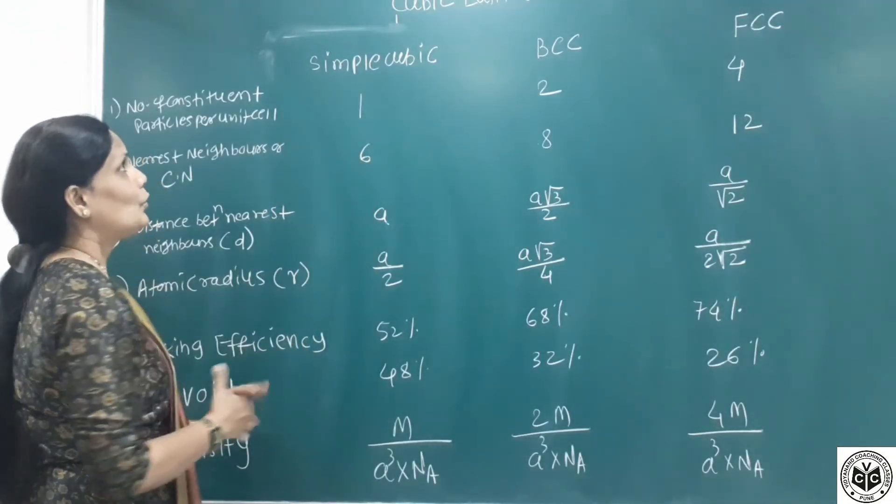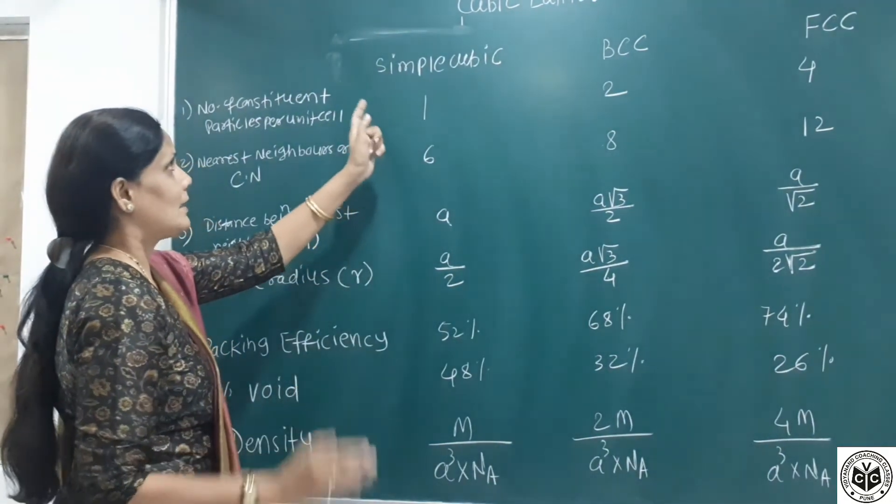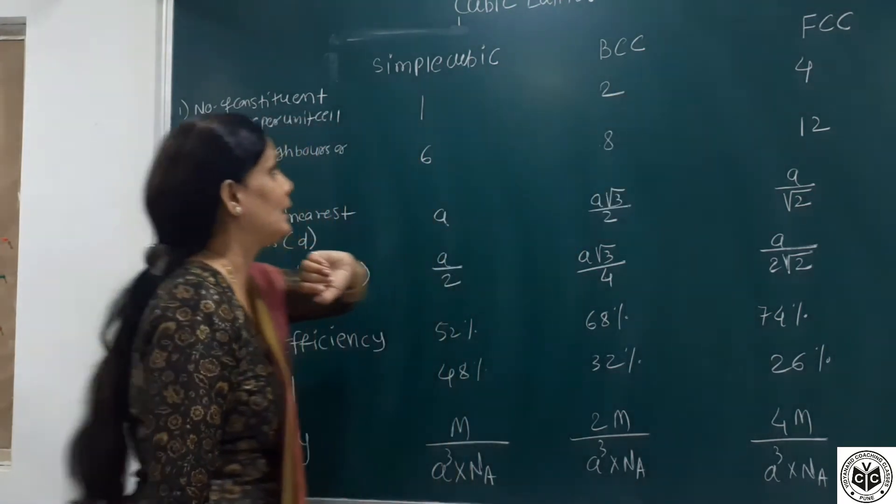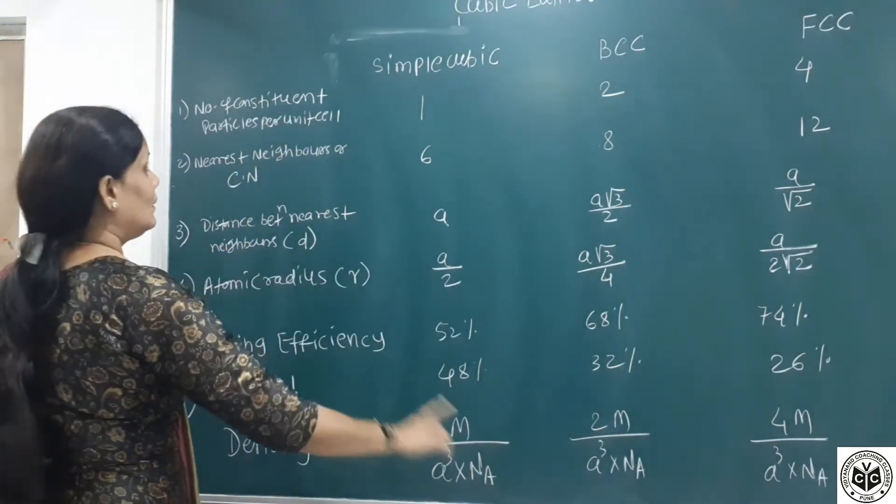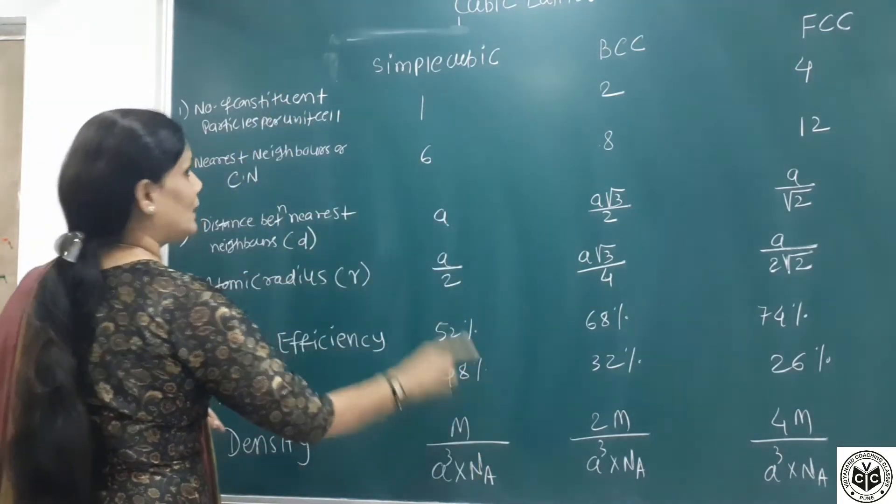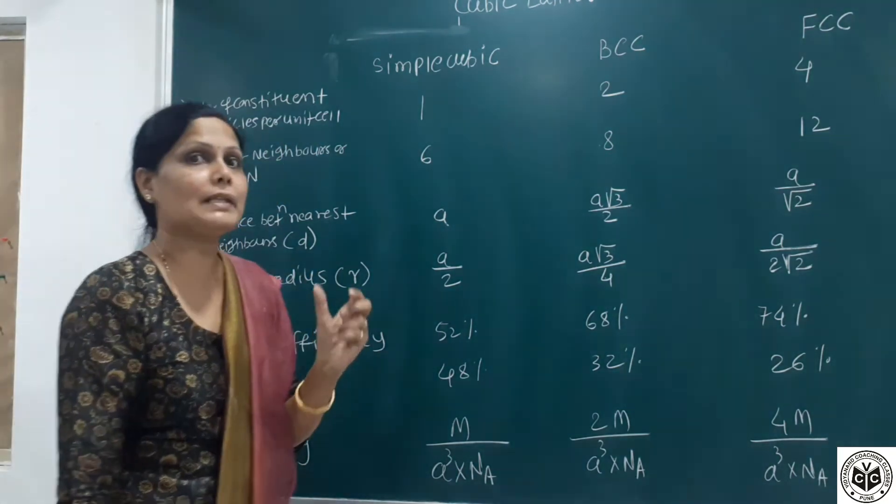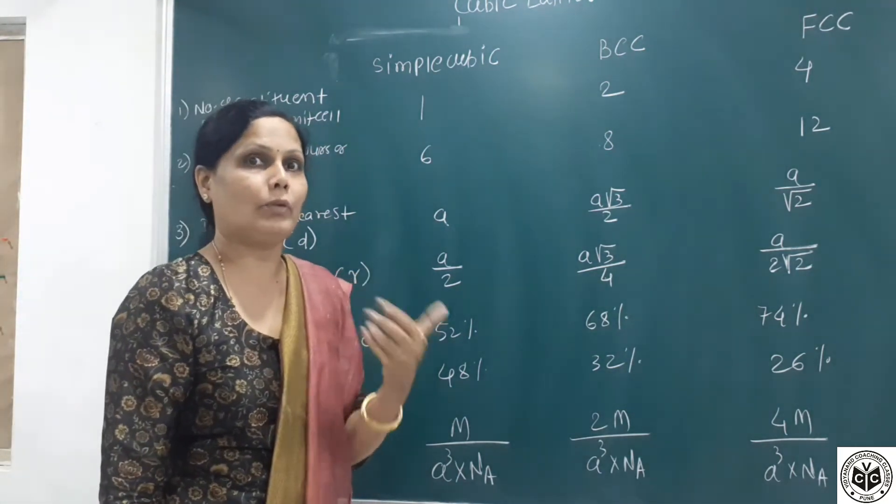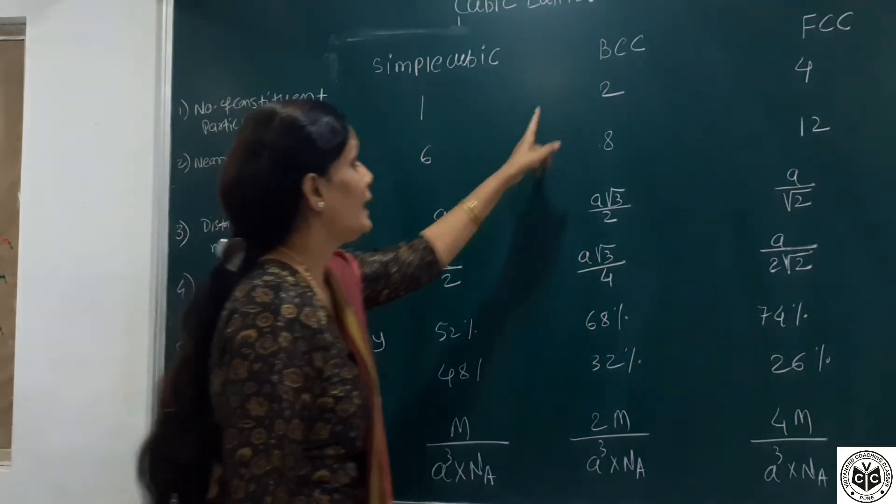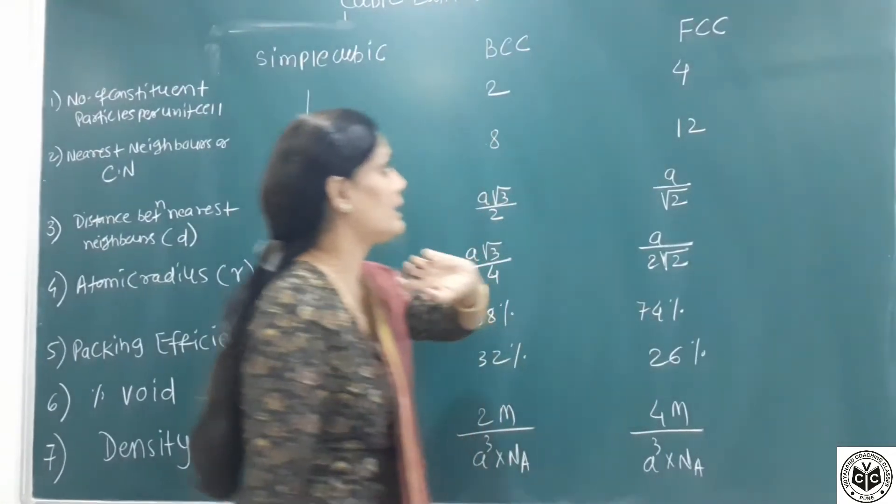We will study cubic lattice structure in detail. It has three types: simple cubic, body centered cubic BCC, and face centered cubic FCC. In that table, all parameters are given and that table is very important for your MCQ purpose. Number of constituent particles per unit cell—for simple cubic Z is one, for BCC two particles, and for FCC four particles.